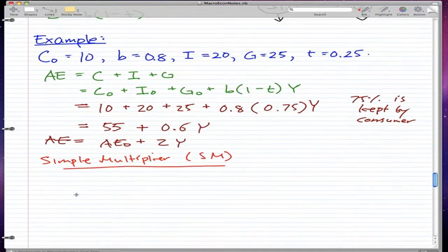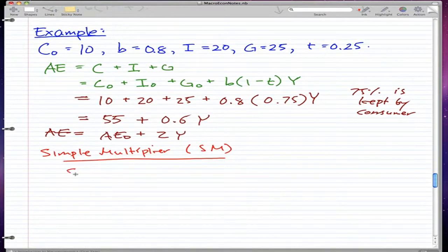Now let's see. Remember that I mentioned in the last video as well that SM is equal to 1 over 1 minus Z. 1 over 1 minus Z.